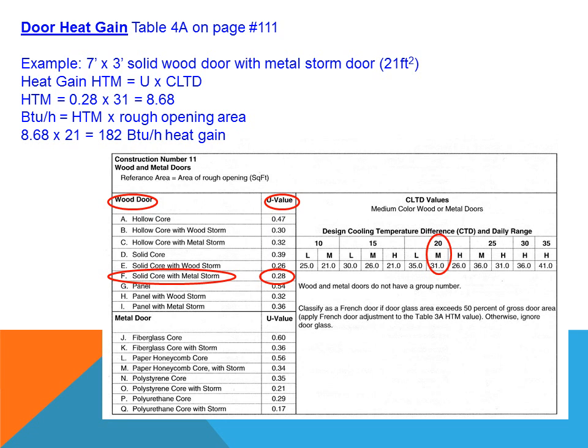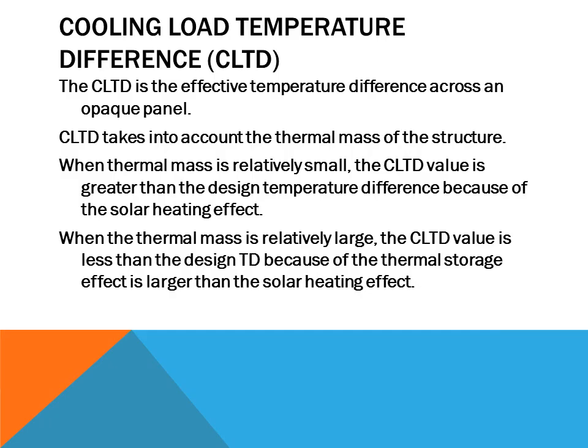As we've explained before, the Cooling Load Temperature Difference — CLTD — is the temperature difference in the summertime between the indoor temperature and the outdoor design temperature. We need to look at the table to determine that number based on where the structure is located. In this project, we're using Waukegan as the factor for both summer and winter heat load design outdoor temperatures.